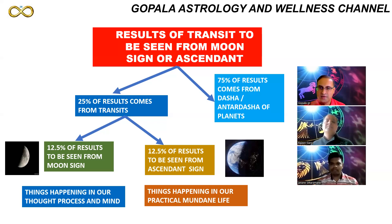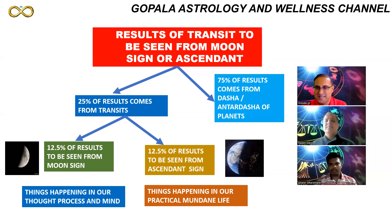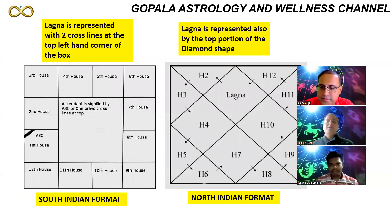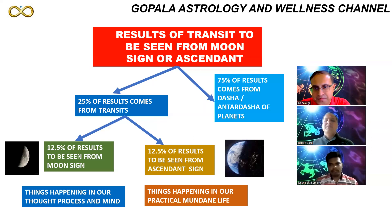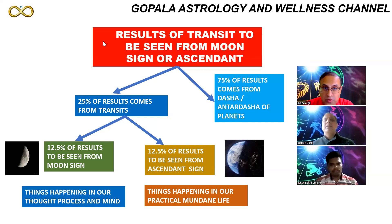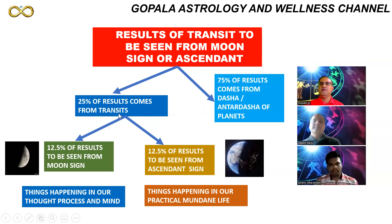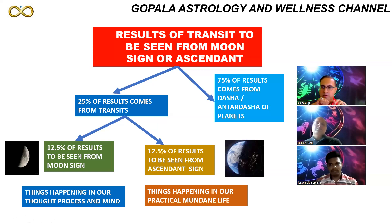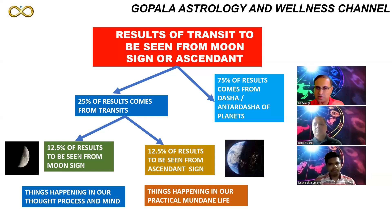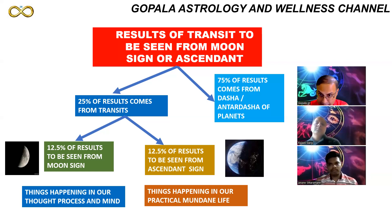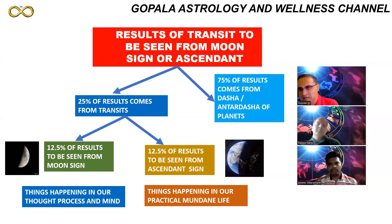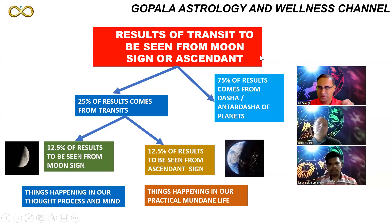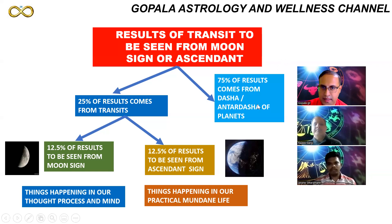Tamil asked about Varshfala — the annual solar return chart calculated from each birthday. Varshfala means taking your birthday as the beginning of a new solar year and casting a new kundali from that point to make predictions for that year. This is a Gochara (transit) prediction tool — it is part of that 25 percent transit result, not the dasha system.